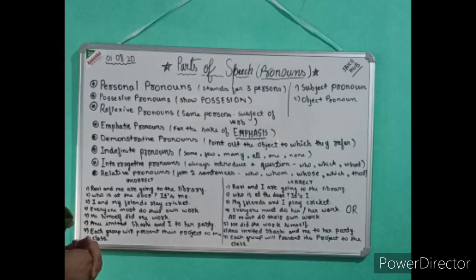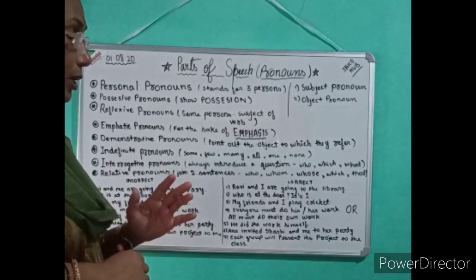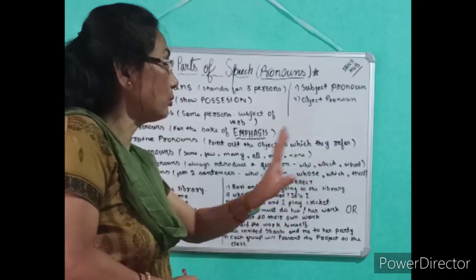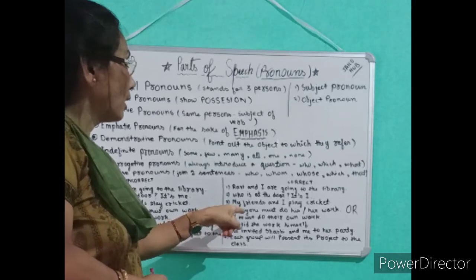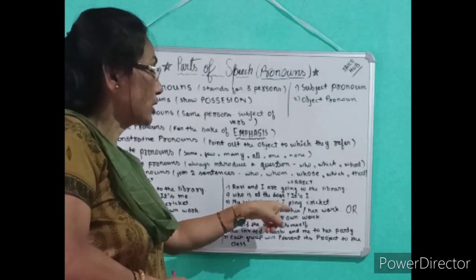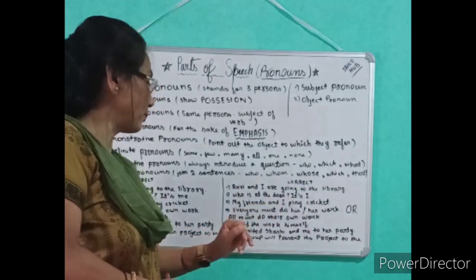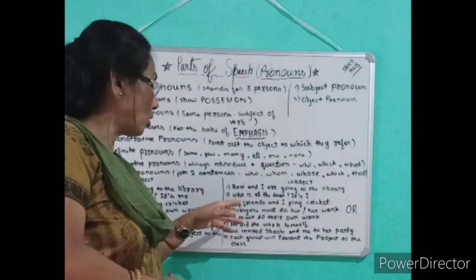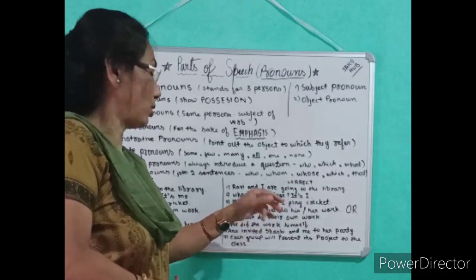Next: 'Everyone must do their own work' — this is a wrong sentence. You have to say: 'Everyone must do his or her work.' Because 'everyone' is singular, so the possessive pronoun should be 'his or her,' which is also singular. Or you may say: 'All must do their own work.' 'All' is a plural pronoun, so there should be a plural possessive pronoun.